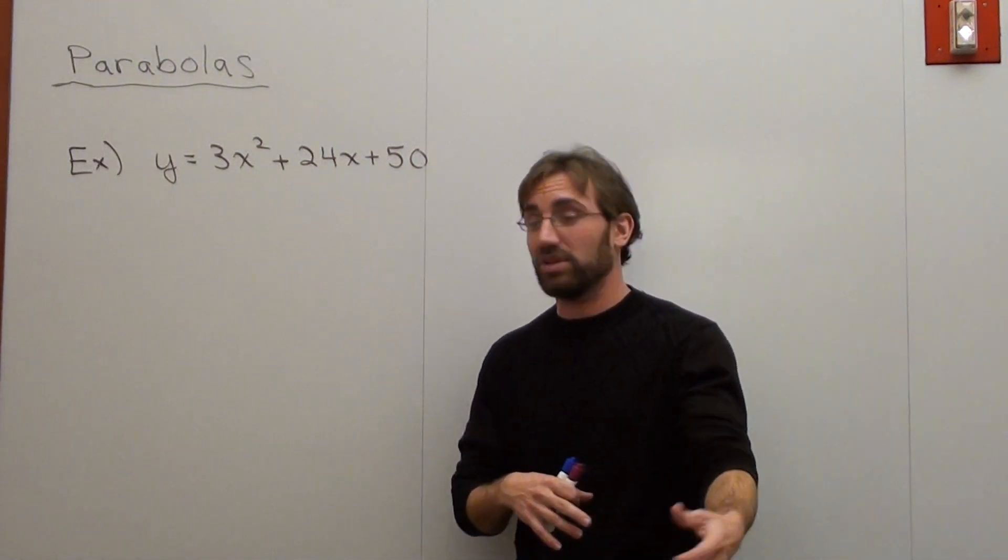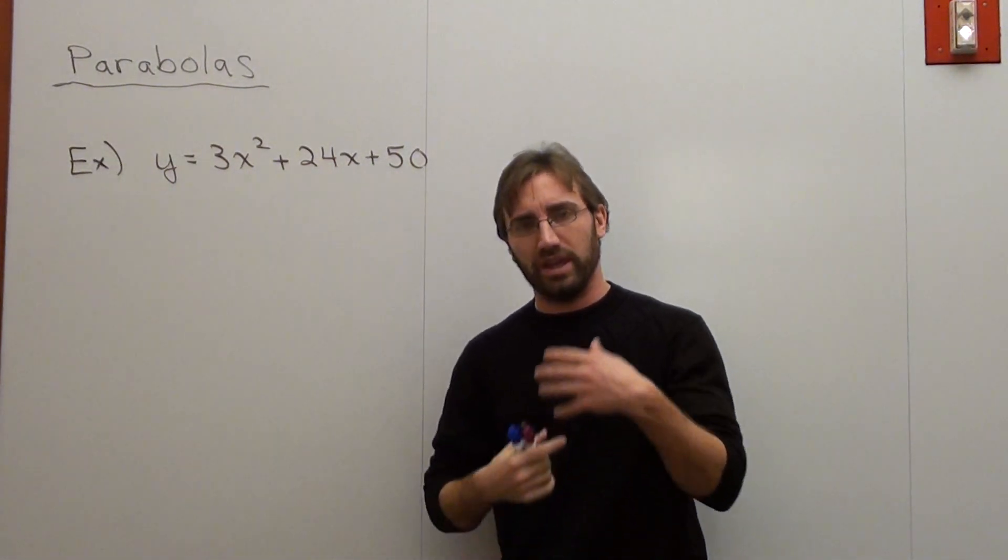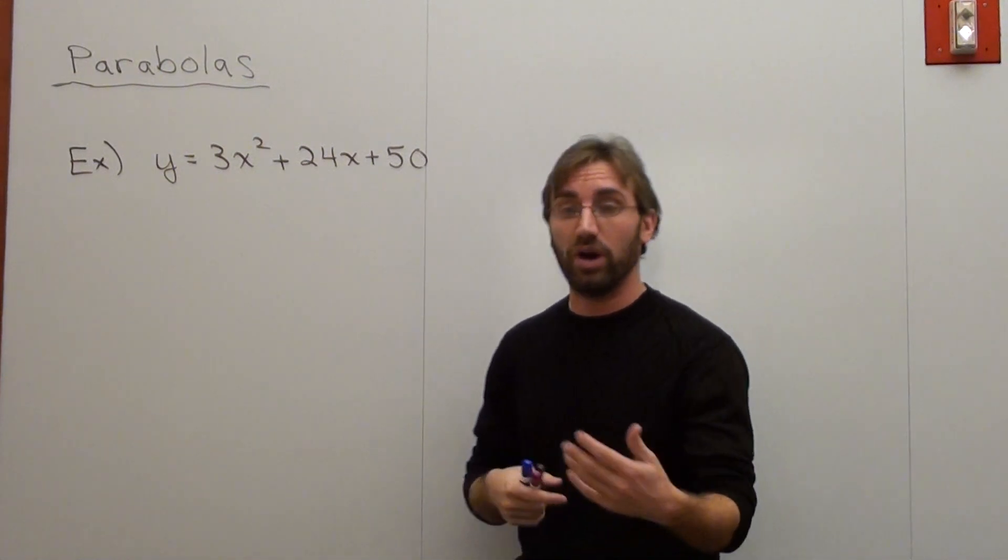Hello again. We're doing a parabola here. y equals 3x squared plus 24x plus 50 is the equation. And what we're going to do is we're going to go ahead and we're going to graph this.